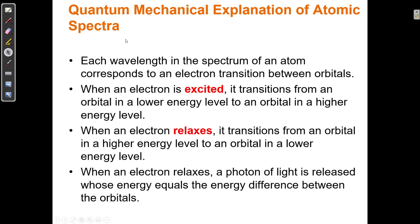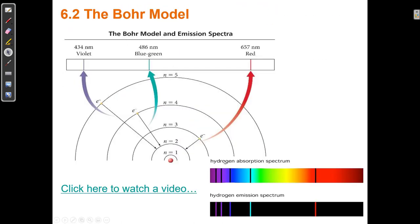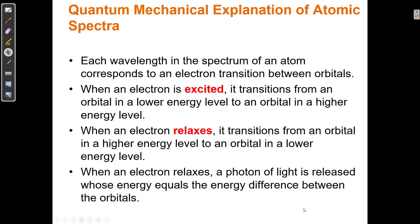Each wavelength in the spectrum of an atom — the absorption spectrum and emission spectrum — corresponds to an electron transition between orbitals. When an electron is excited and absorbs energy, it goes from a lower orbital to an outer orbital with higher energy. Then the electron relaxes, going from an outer orbital to an inner orbital, and it loses energy.